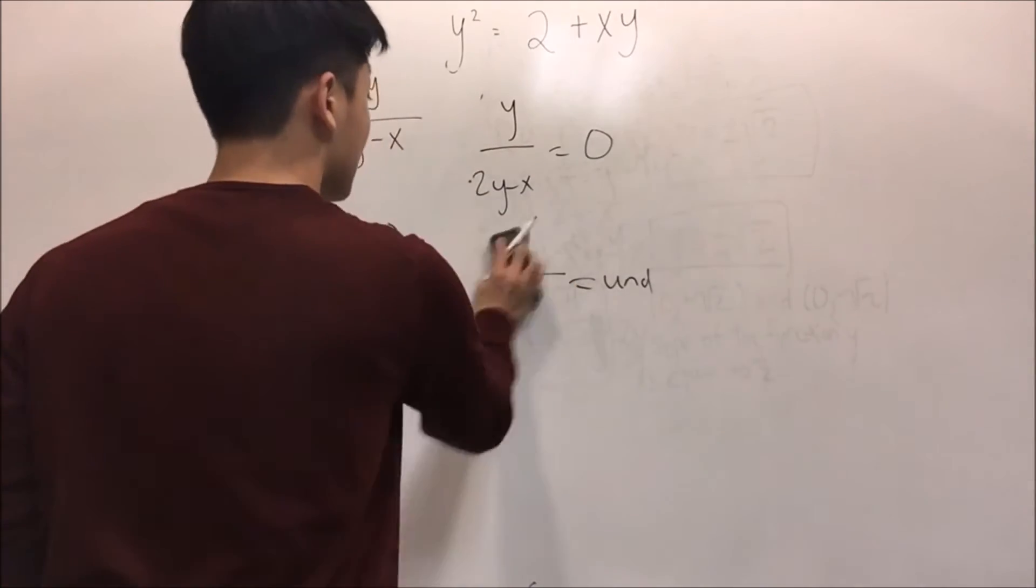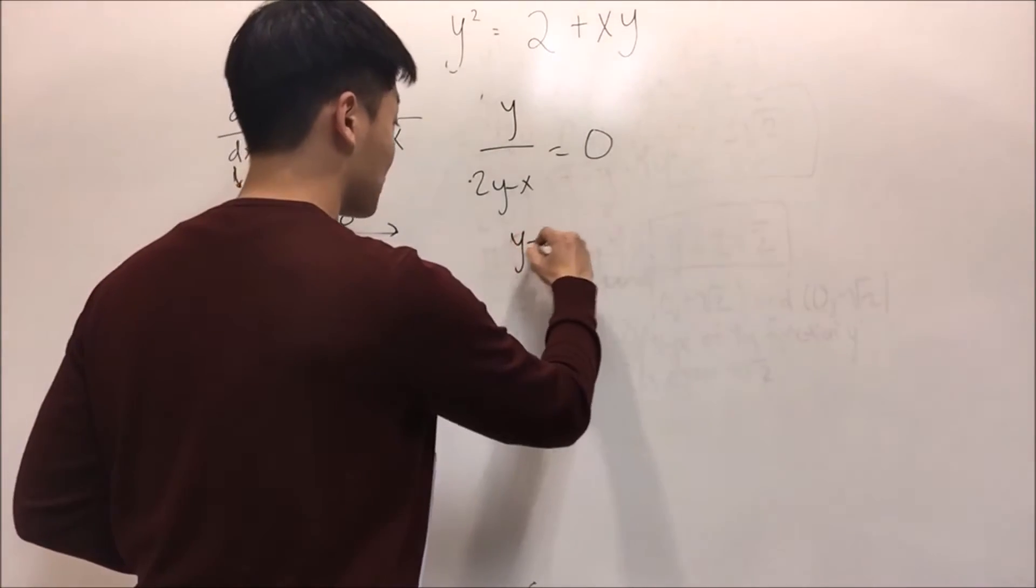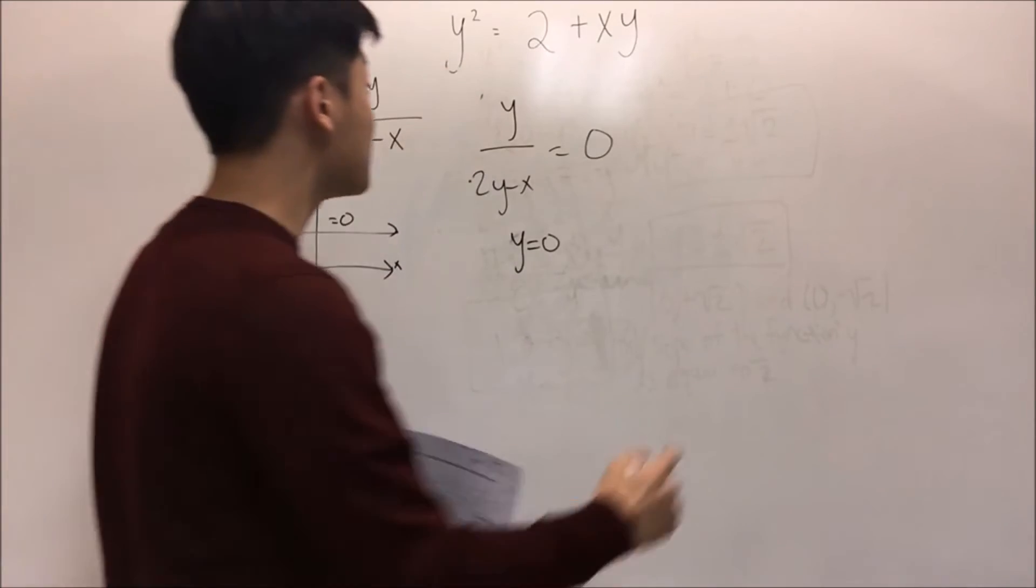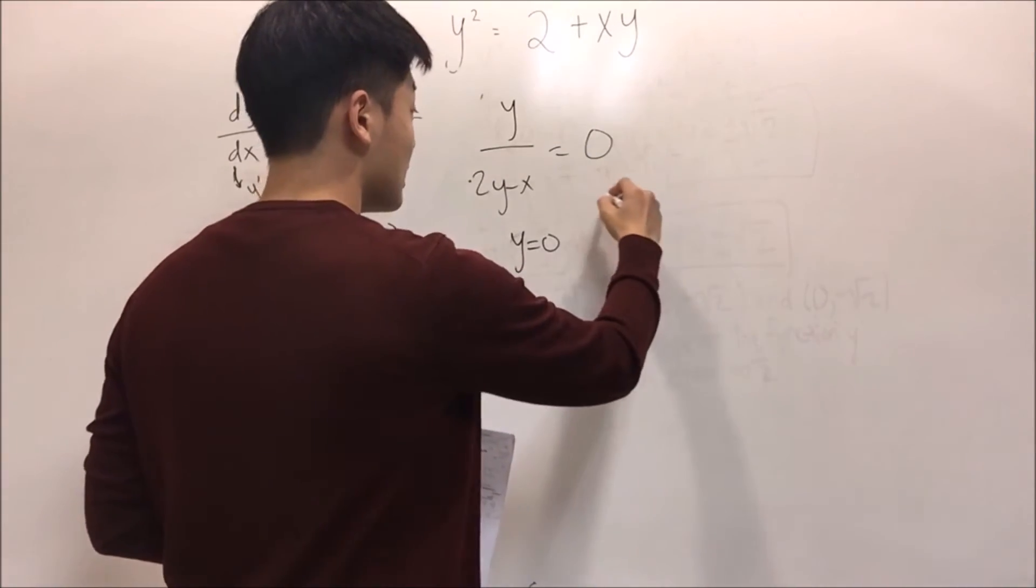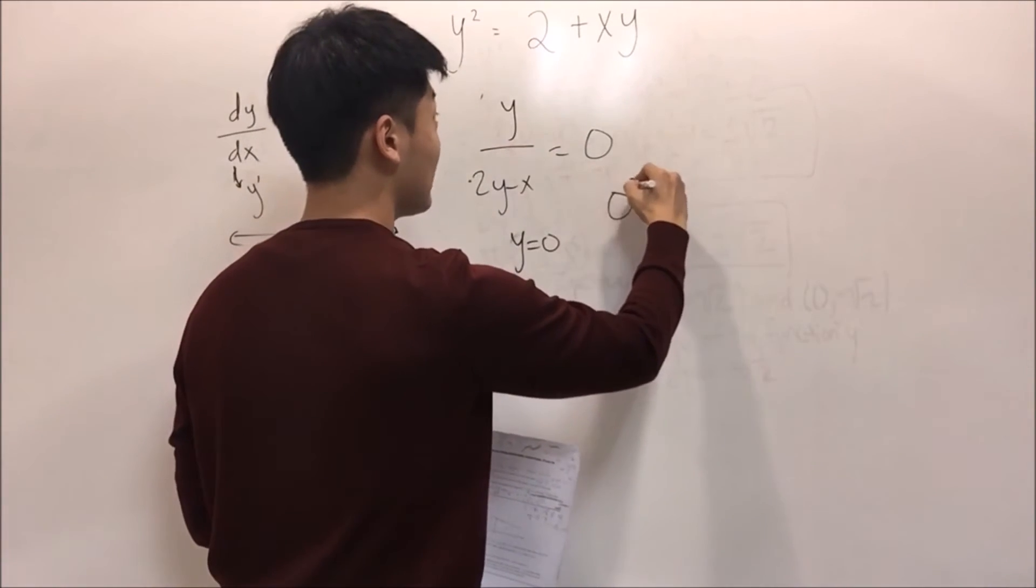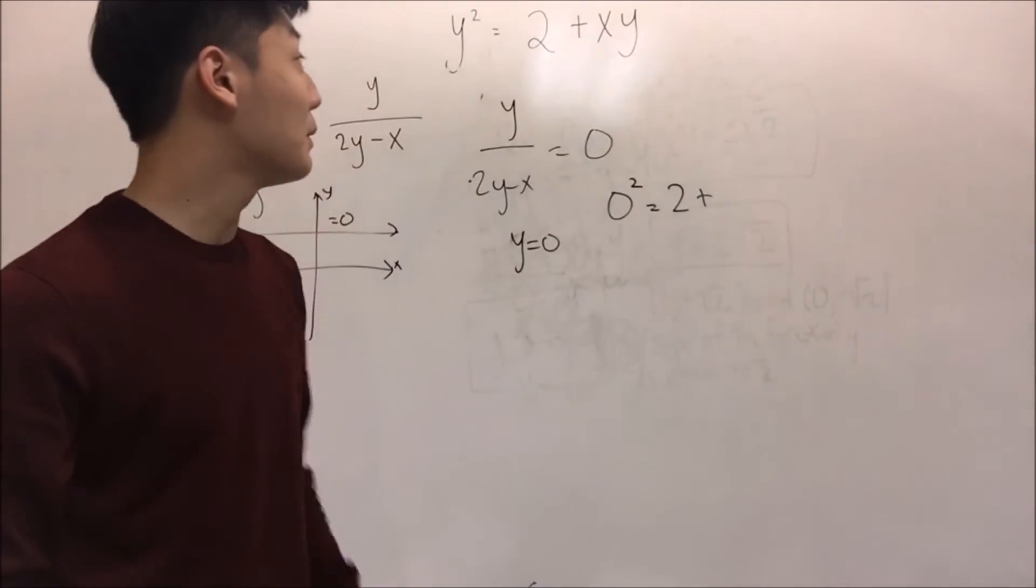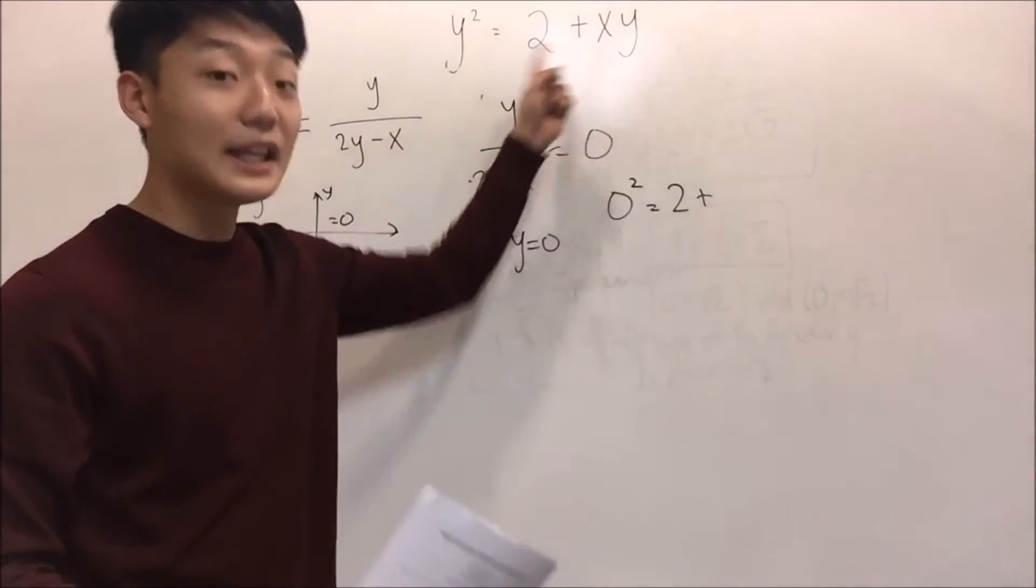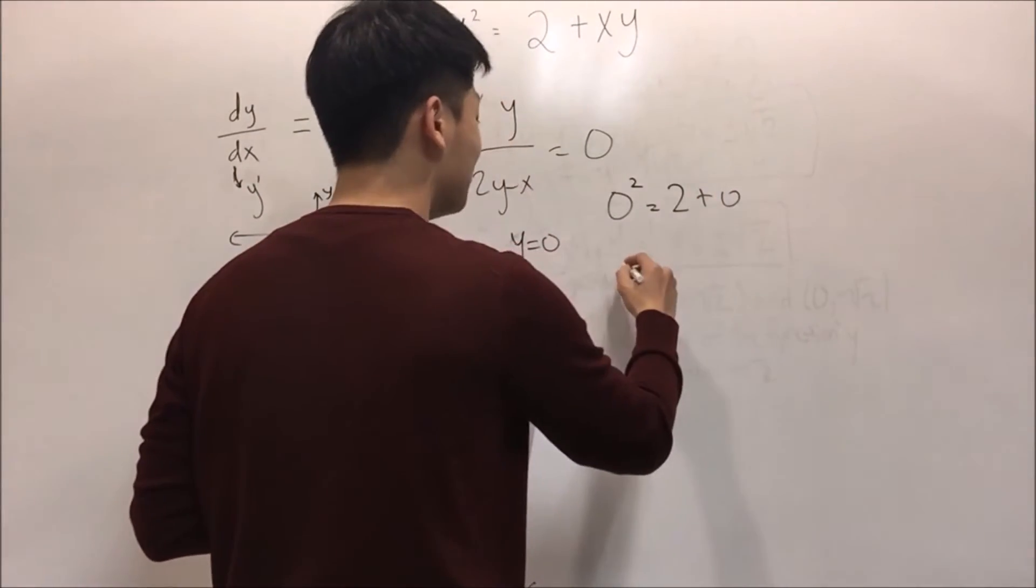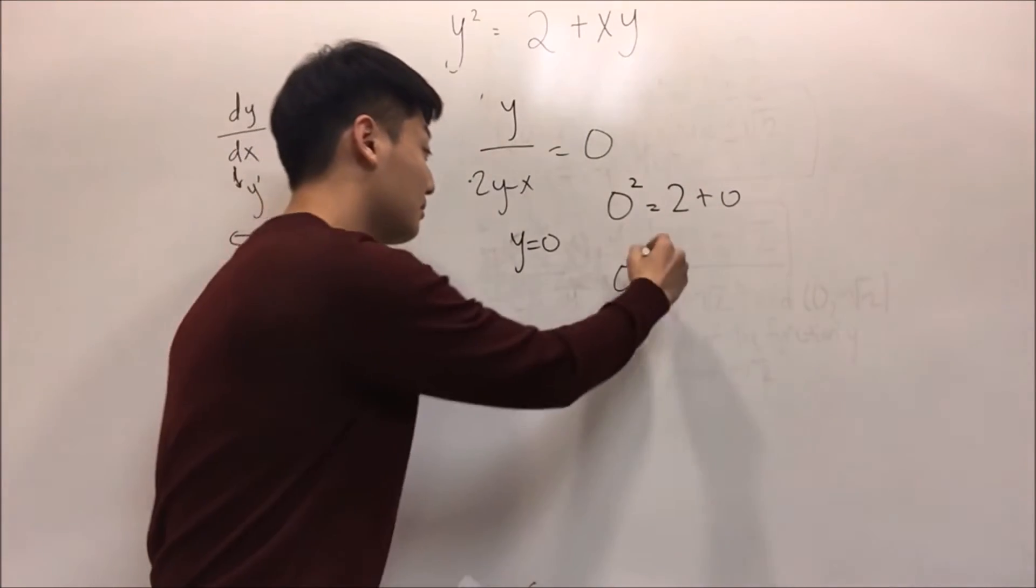That means because the numerator is y by itself, y will always equal zero. Let's jump to the original function. When we plug y as zero, it will become zero squared equals 2 plus, like before, when we multiply zero to any number, it will become zero all the time, which will become zero equals two. Does this make sense? No.